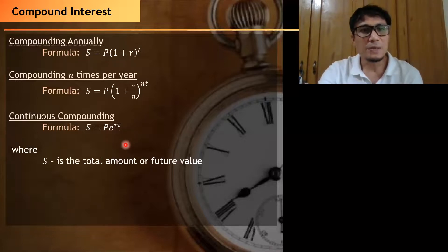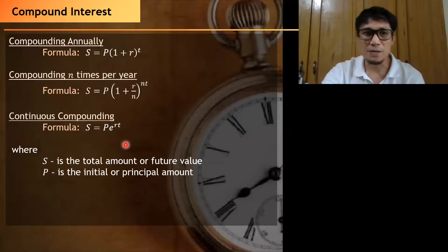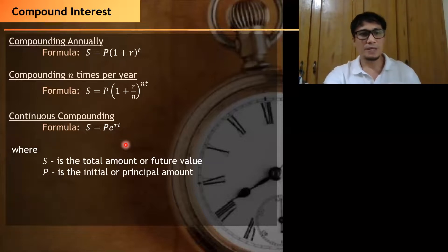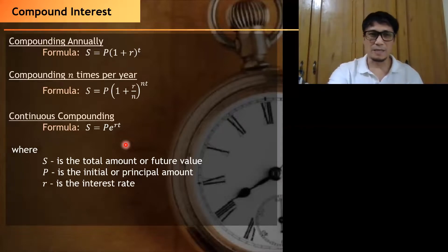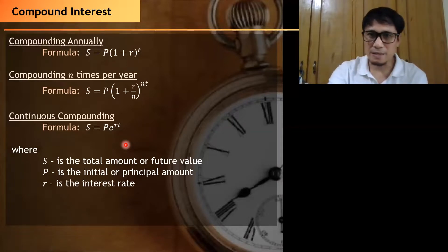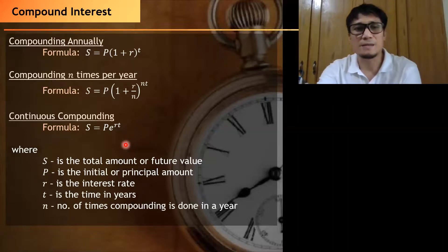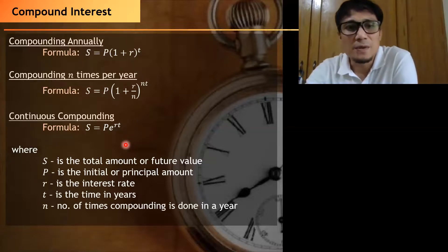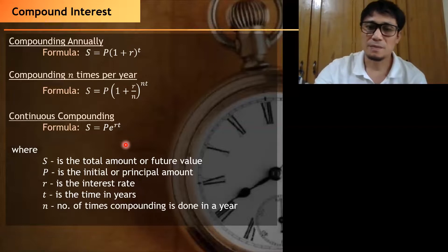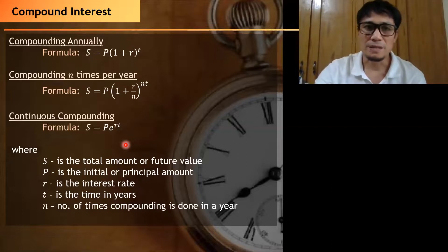To summarize the variables: S refers to the total amount or future value, P is the initial or principal amount, R is the interest rate in years, T is the time in years, and N is the number of times compounding is done in a year.